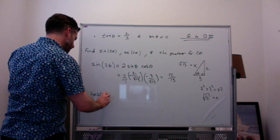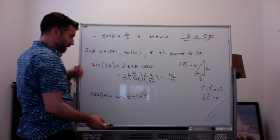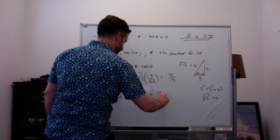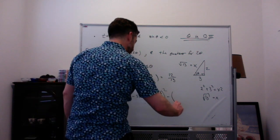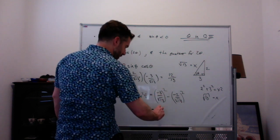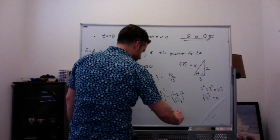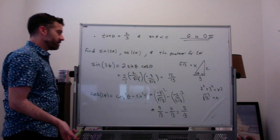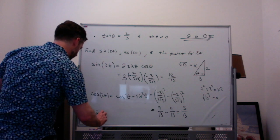Cosine of 2 theta is cosine squared theta minus sine squared theta. Cosine theta is negative 3 over root 13 squared, giving 9 over 13. Sine of theta is negative 2 over root 13 squared, giving 4 over 13. So 9 over 13 minus 4 over 13 is 5 thirteenths. Since sine of 2 theta is positive and cosine of 2 theta is also positive, 2 theta must be in quadrant 1.